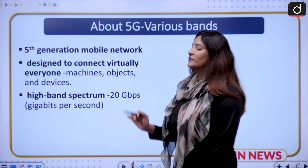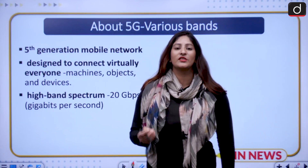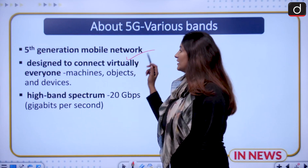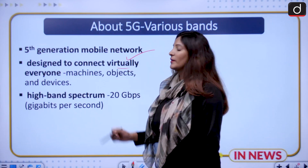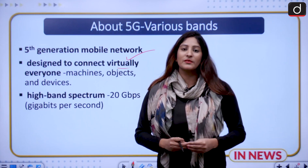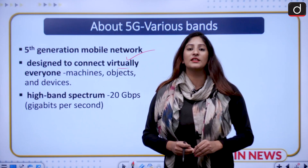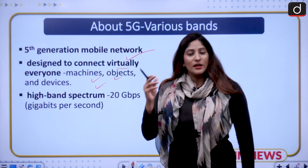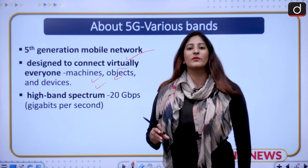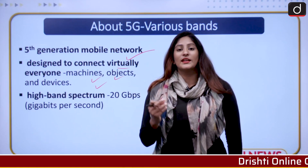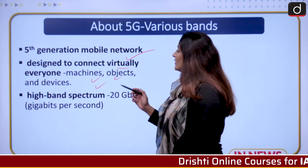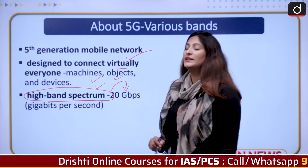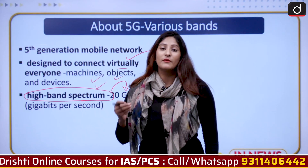Like we have 1st, 2nd, 3rd and 4th generations of internet, we now have the 5th generation of mobile network by the name of 5G. It is designed to connect virtually everyone — that means the internet of things is possible with high-frequency internet provided to us. It will go from machines to objects and devices, enabling them to communicate amongst themselves to assist humans for better efficiency. The high-band spectrum gives us speeds of 20 gigabits per second.